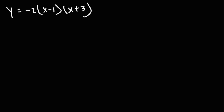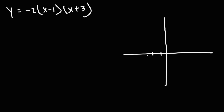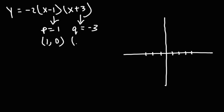We can see that p is going to be positive 1 and q is negative 3. You need to flip the sign — if you see negative 1, p is 1; if you see positive 3, q is negative 3. That gives us the x-intercepts 1 comma 0 and negative 3 comma 0. Let's go ahead and put that in the table.